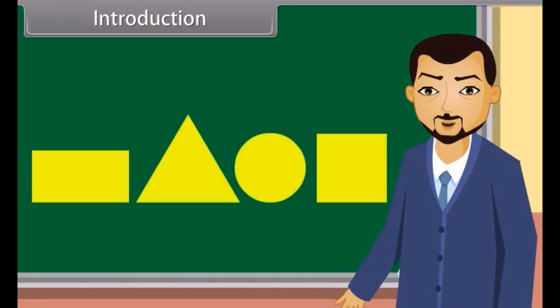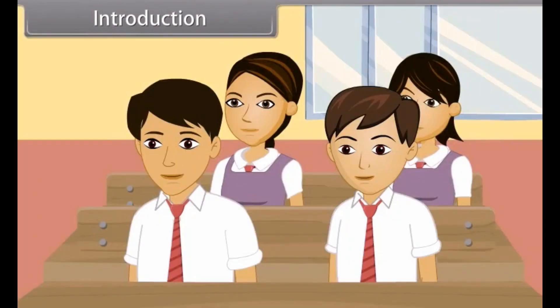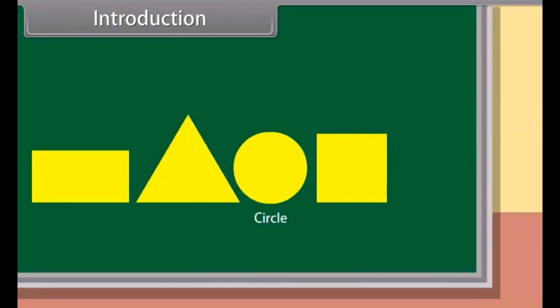I will draw some shapes on the blackboard. You have to tell me their names. This is a circle. And this is a rectangle. This is a triangle. And this is a square, sir.